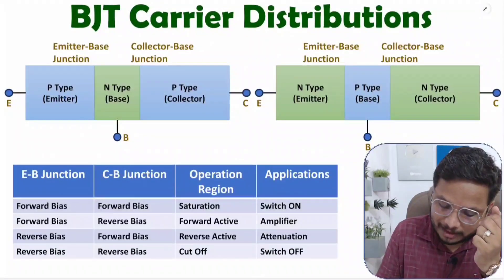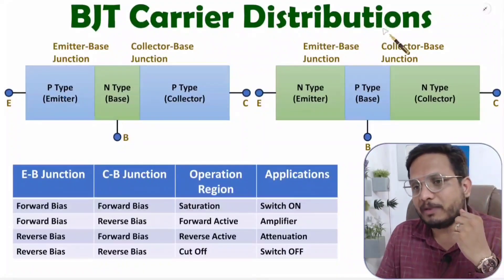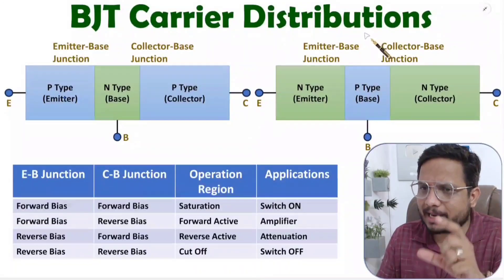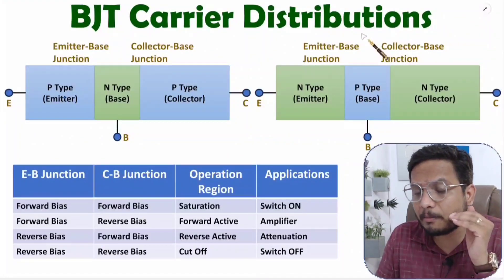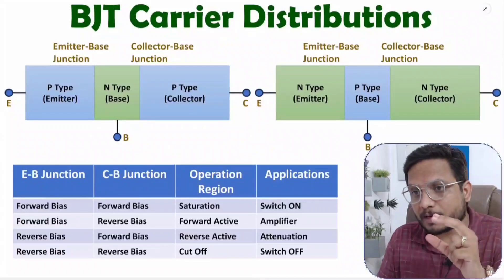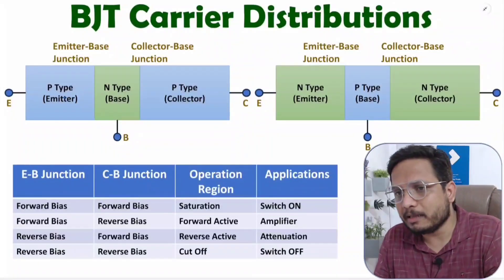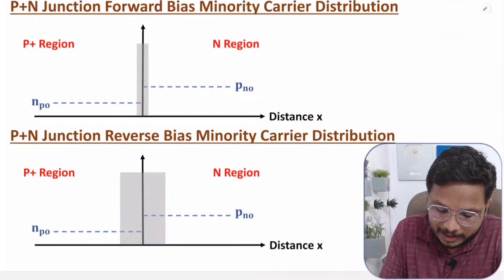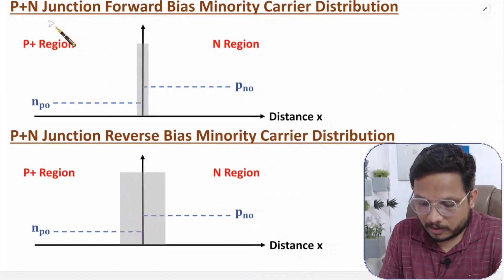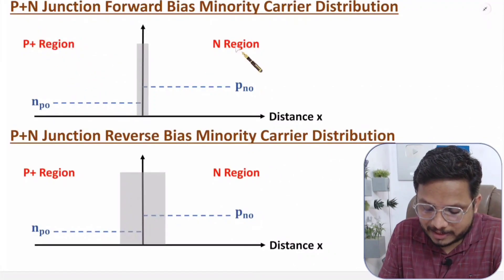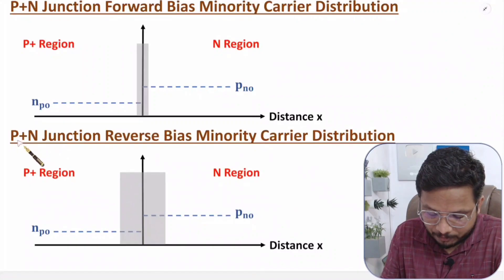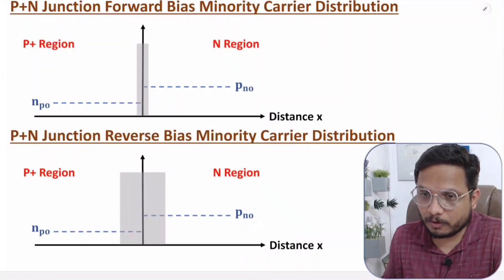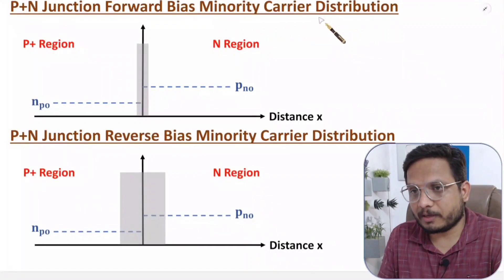Now in this video I'll explain how carrier distribution will happen. To understand carrier distribution in BJT, you first need to understand carrier distribution in a PN junction. I'll be considering a P-plus N junction — first in forward bias, then in reverse bias — and explaining minority carrier distribution.